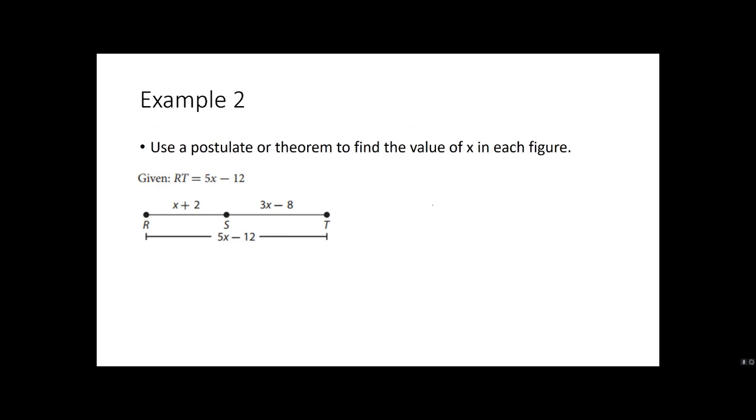Example two. Using a postulate or theorem to find the value of x in each figure. Basically, we're going to use a t-chart type deal with our statements on the left and our reasoning to the right. So this is the general setup. We have a given. They gave us a whole bunch of stuff. We know that rt is the bigger line segment, but it's comprised of rs plus st. This is the line segment addition postulate.